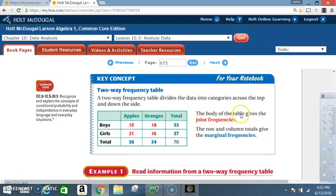The body of the table gives the joint frequency. In other words what you see there in red is called the joint frequency. The row and column totals give the marginal frequency. So the totals gives the marginal.